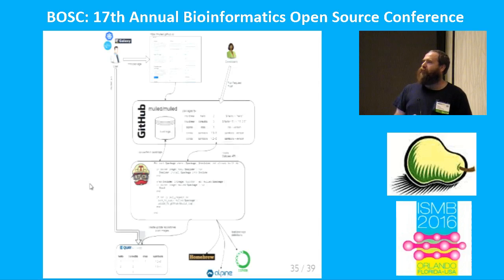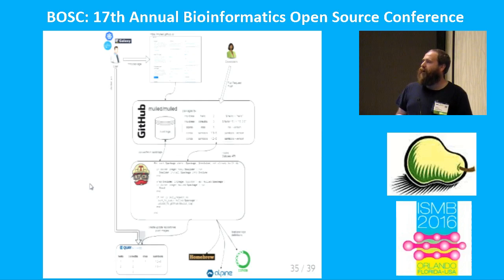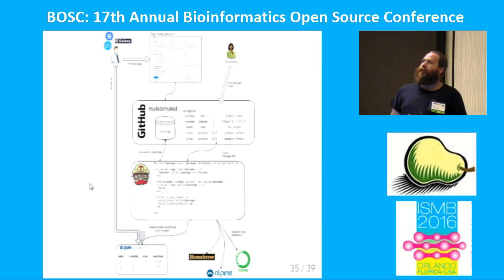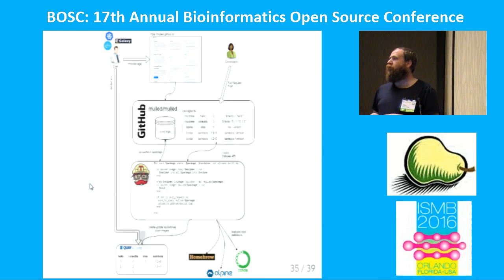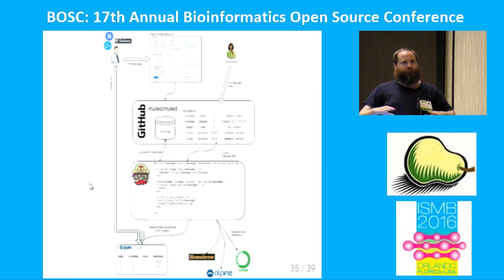Just to quickly highlight the Mulled project from Bjorn Grunen: it can take descriptions of abstract software being used — such as SAMtools and BWA — and automatically builds Docker containers corresponding to these and publishes them, with consistent names based on the requirements. Docker files are great but they're sort of a black box. Hopefully this structured approach provides a great level of metadata about what's happened to install this software, meaning we can collaborate without needing to collaborate at the Docker level.